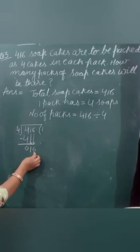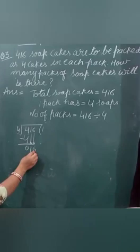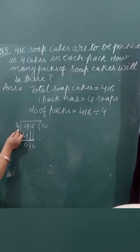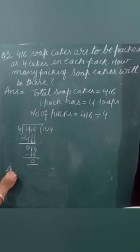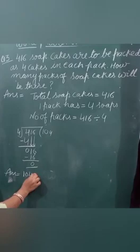It will become 16. When we bring the second digit down, we put a 0 here in the quotient. Now count the table of 4 till we get 16. 4 fours are 16. Subtract it. 16 minus 16, we get 0. Answer is 104, total packs.